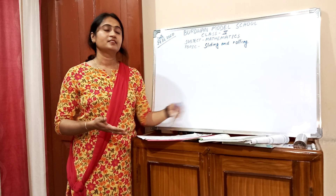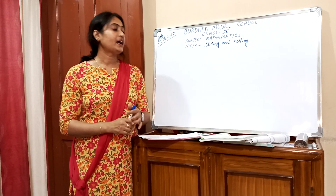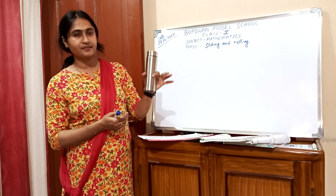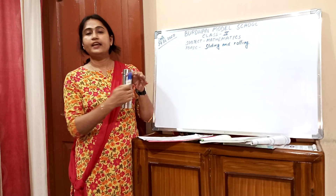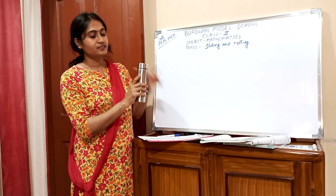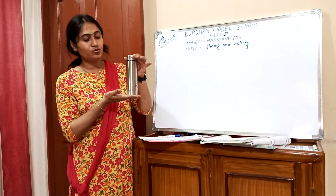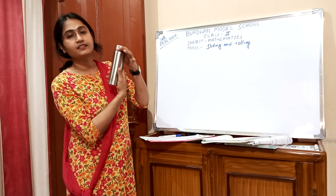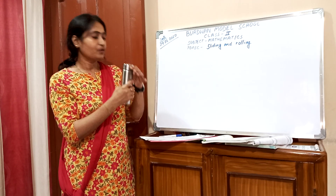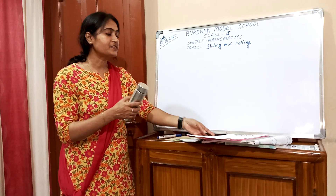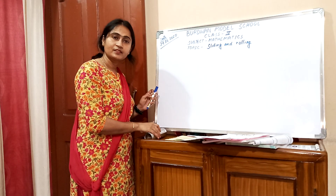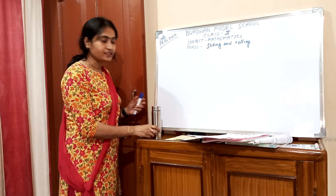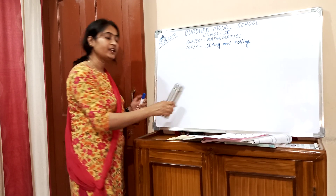So cube and cuboid can slide. Now the cylinder — an example of a cylinder is a bottle. It has one curved surface and two flat surfaces. This is a flat surface, this is a flat surface, and this is a curved surface.